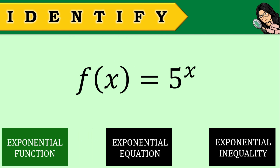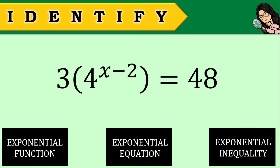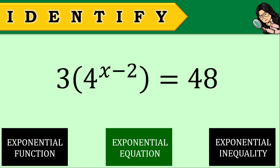How about this last item: 3 multiplied by the quantity of 4 raised to the power of X minus 2, is equal to 48. Is it an exponential function, an equation, or an inequality? This is an example of an exponential equation. Very good — that is correct.